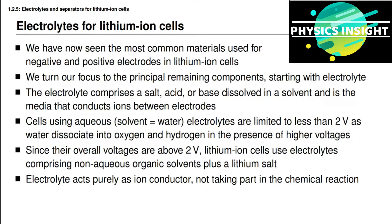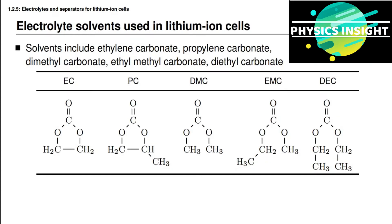The electrolyte in a lithium-ion battery cell acts purely as an ion conductor — it does not take part in the normal chemical reactions for charging and discharging the battery cell. The table on this slide shows some of the most common solvents used in lithium-ion battery cell electrolytes. These include ethylene carbonate, propylene carbonate, dimethyl carbonate, ethylmethyl carbonate, and diethyl carbonate. The table also shows the common abbreviations you will see in the literature.